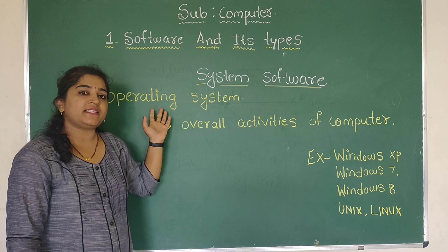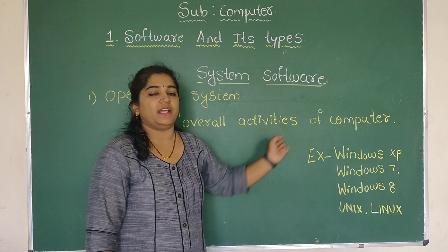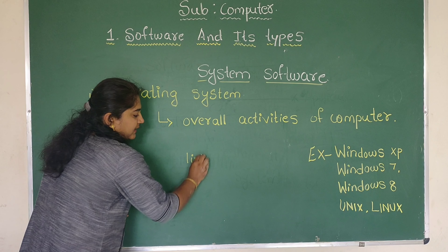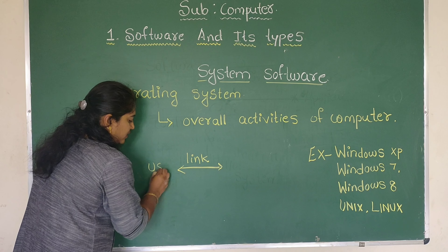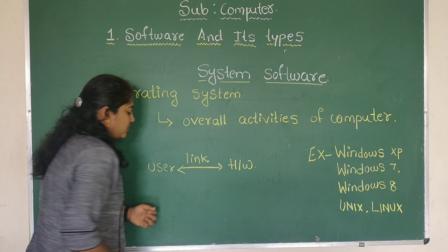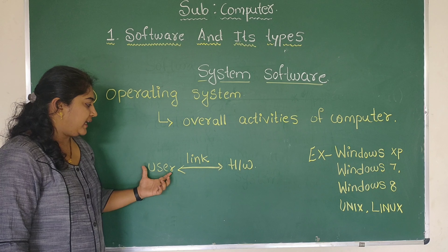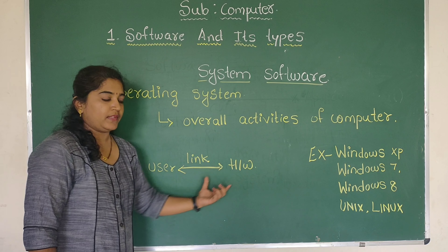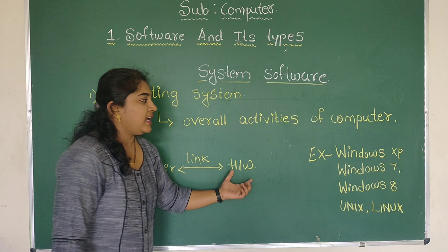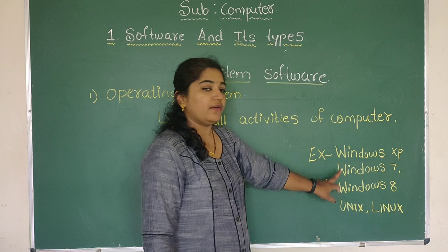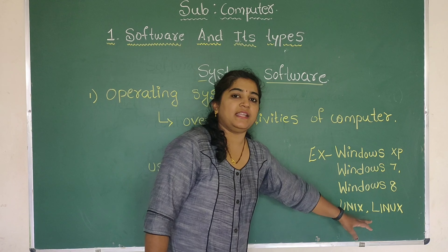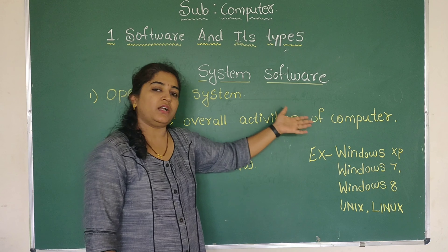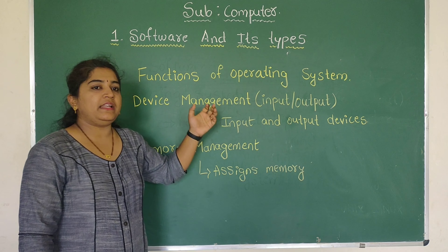Now, what is an operating system? An operating system controls the overall activity of the computer and acts as a link between the user and the hardware. The user means those who are working on the computer, and hardware means the computer itself. Some examples of operating systems are Windows XP, Windows 7, Windows 8, Unix, and Linux.